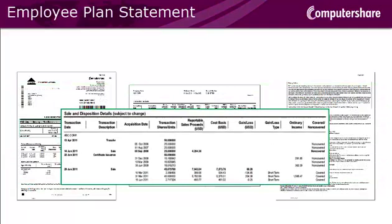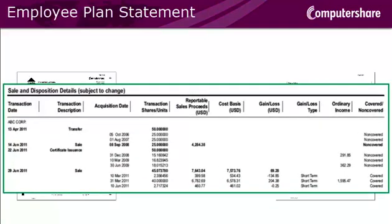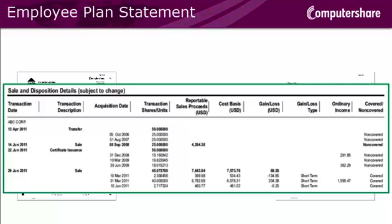The Sale and Disposition Details section is a new section on the statement which provides you with information related to the cost basis of the shares which were debited from the account during the statement period. You can see the acquisition date, cost basis, and the covered indicator for the shares. You might see blank spaces in this section for certain non-covered transactions if the information was not available to Computershare.